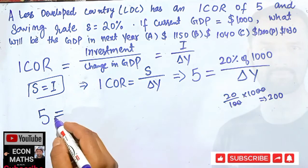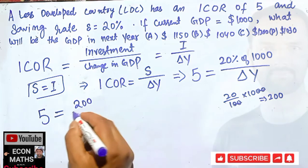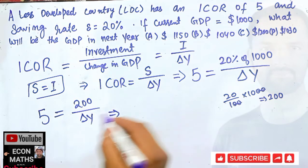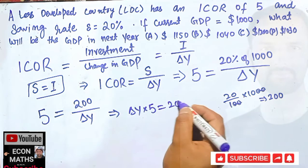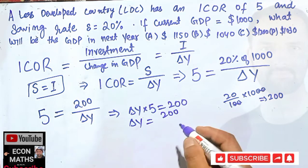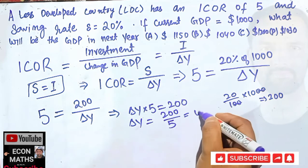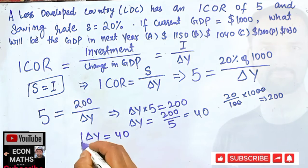That means 5 is equal to 200 upon delta Y, which implies delta Y into 5 is equal to 200, which implies delta Y is equal to 200 upon 5. So we have 5 for the 25 zeros are 0. That means change in our GDP is equal to 40.